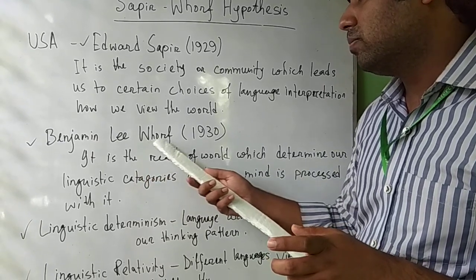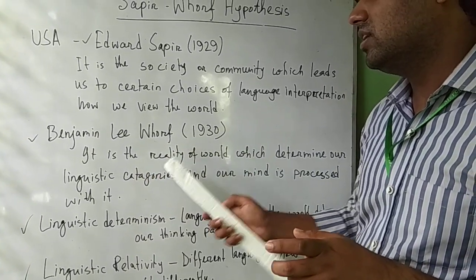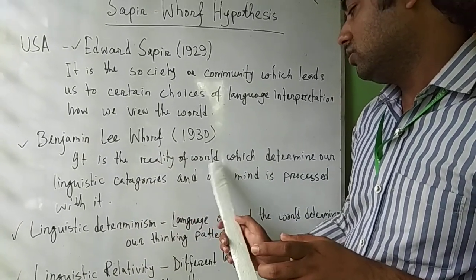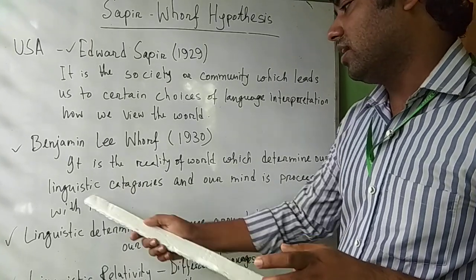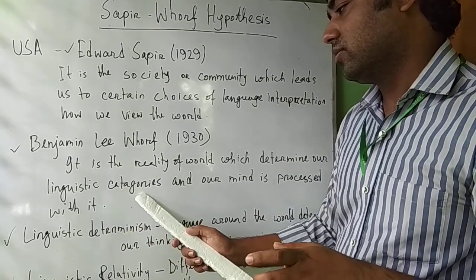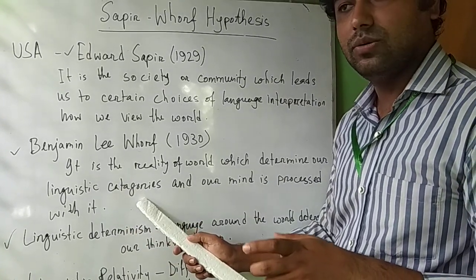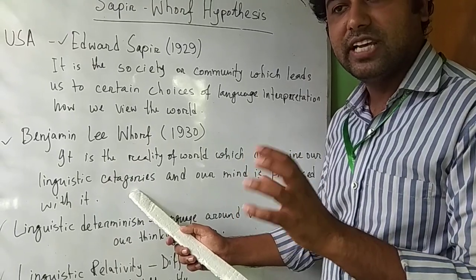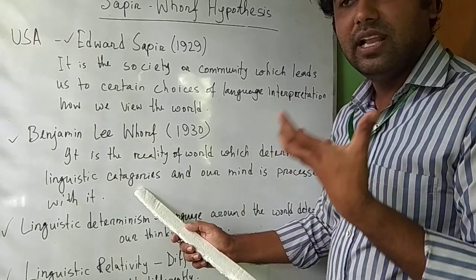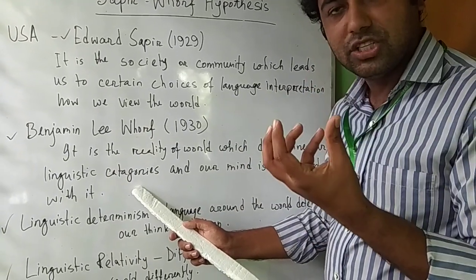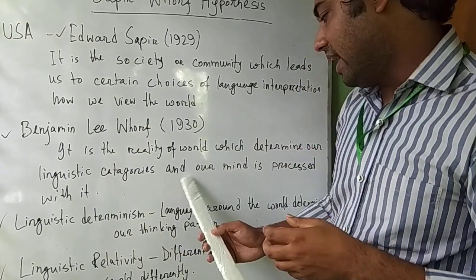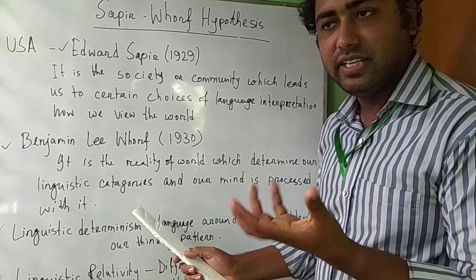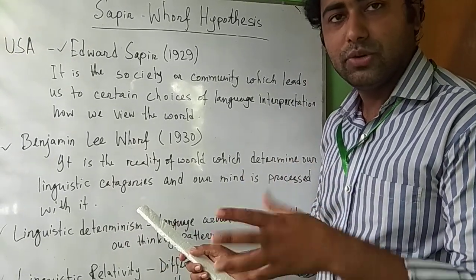Benjamin Lee Whorf, in 1930, believed that it is the reality of the world which determines our linguistic categories. It is the surrounding reality of the world which sets our linguistic program, like word selection, and our mind is processed with it and our mentality is grown up with it.